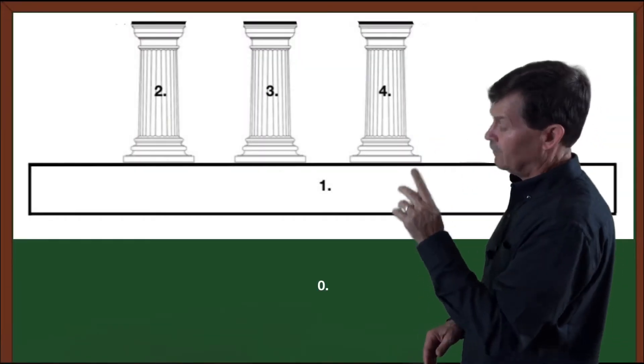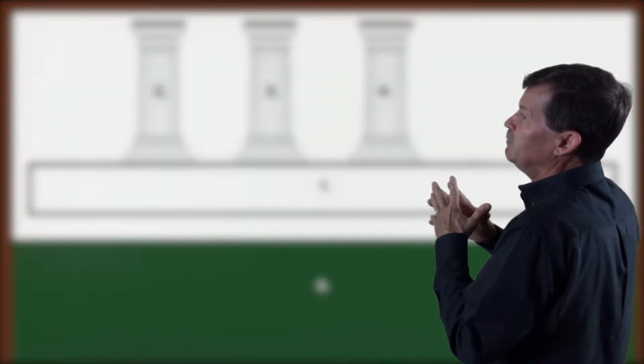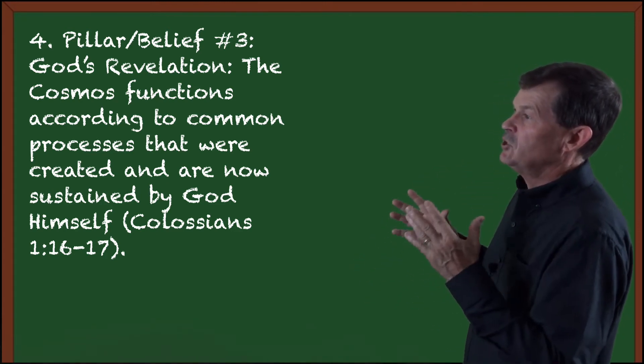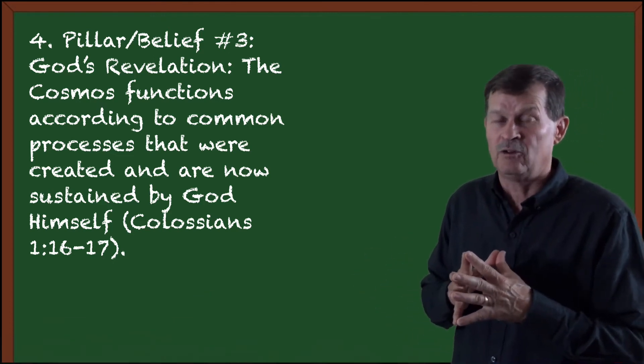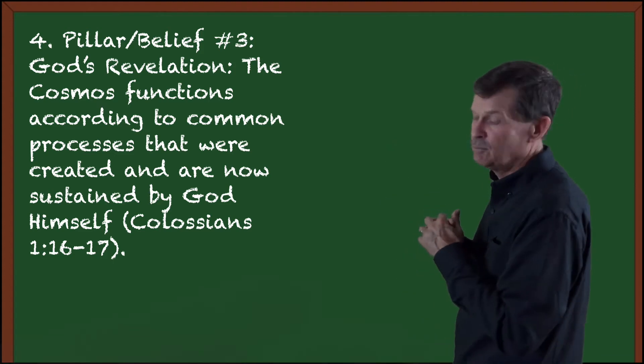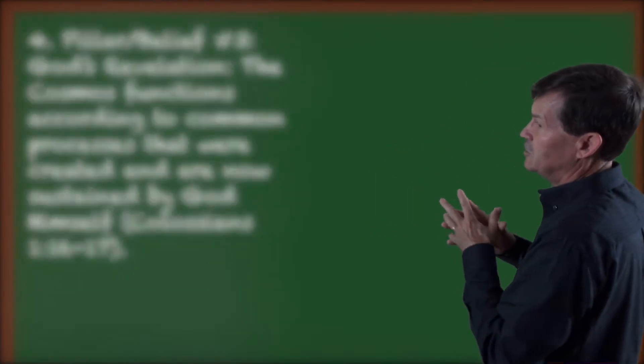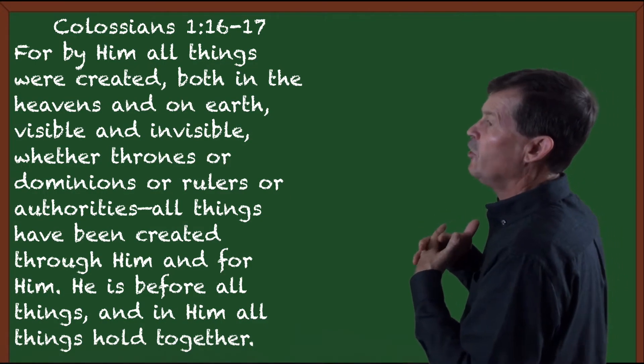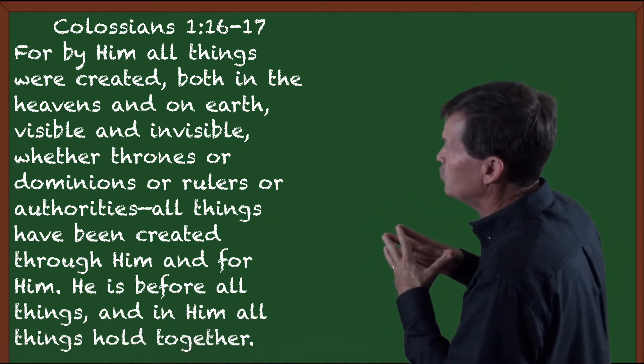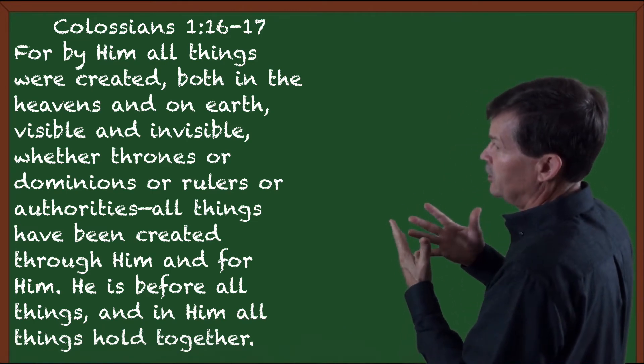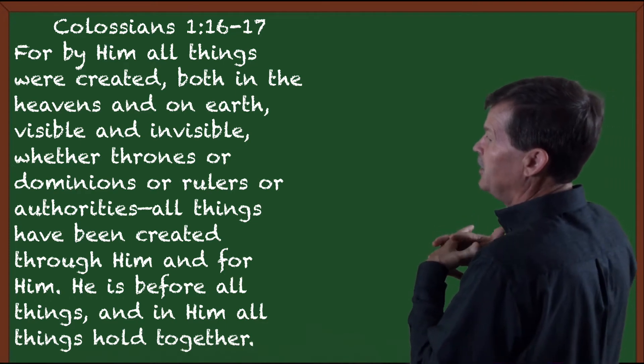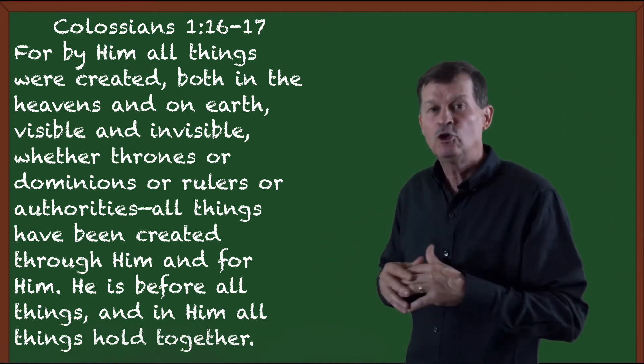On to number three. Number three belief is that, by God's revelation, the cosmos functions according to common processes, not natural processes, because it says they were created and are now sustained by God Himself. That's found in Colossians chapter 1, verses 16 and 17. For by Him all things were created, both in the heavens and on earth, visible and invisible. Whether thrones or dominions or rulers or authorities, all things have been created through Him and for Him. He is before all things and in Him all things hold together.